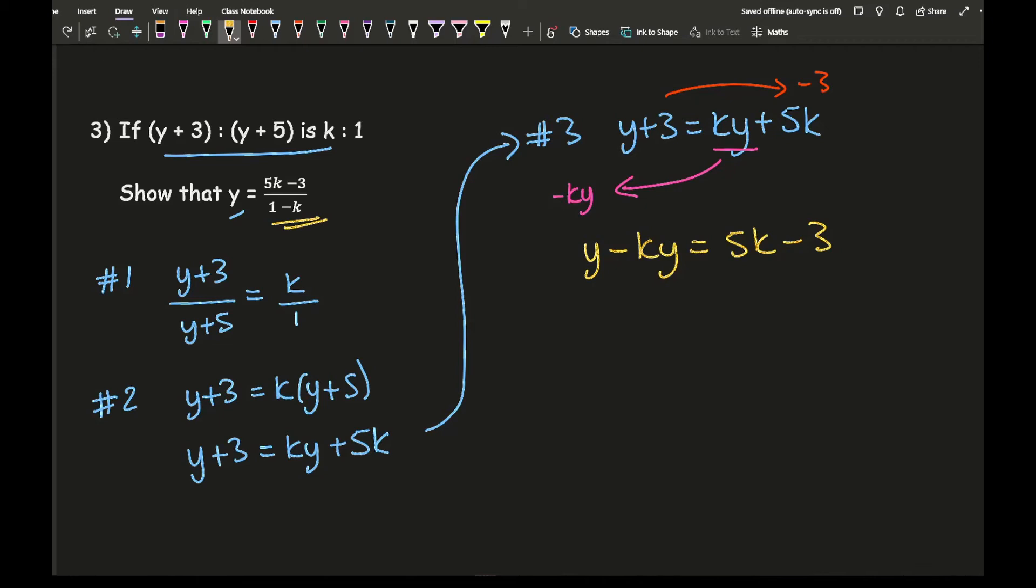I want to make y the subject. Because we're dealing with algebra, I can't just simply join y minus ky together. What I need to do here is factorize, because I only want one y. If I factorize that, I get y times 1 minus k equals 5k minus 3. What's this y doing to this bracket? It's multiplying. To get rid of the bracket, I need to divide. So I'm left with y equals 5k minus 3 over 1 minus k, which is exactly what they wanted me to prove.